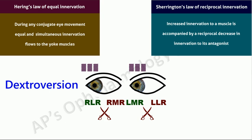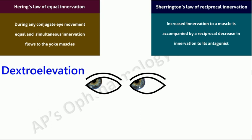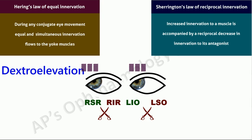Similarly, in dextro-elevation, equal and simultaneous innervation flows to the yoke muscles, i.e. the right superior rectus and the left inferior oblique, according to Hering's law. At the same time, according to Sherrington's law, there is an inhibitory signal to their respective antagonists, i.e. the right inferior rectus and the left superior oblique. Sherrington's law also applies to versions and vergences.